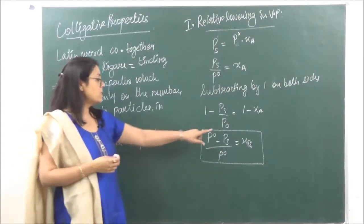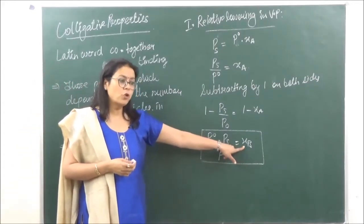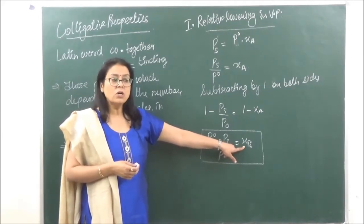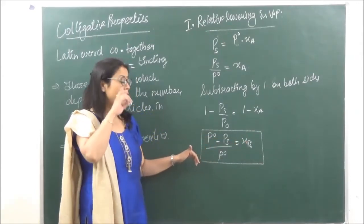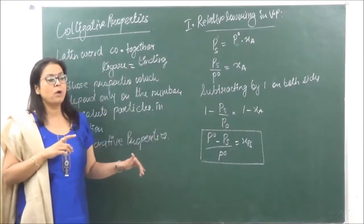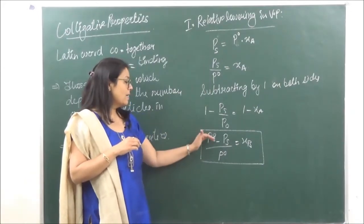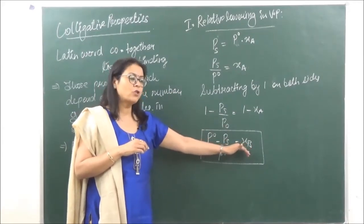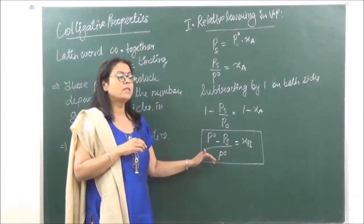The relative lowering in vapor pressure depends upon the mole fraction of the solute, which in turn depends upon the number of moles of the solute particles. Therefore, relative lowering in vapor pressure is a colligative property. This is the complete derivation — worth 2 marks if asked.